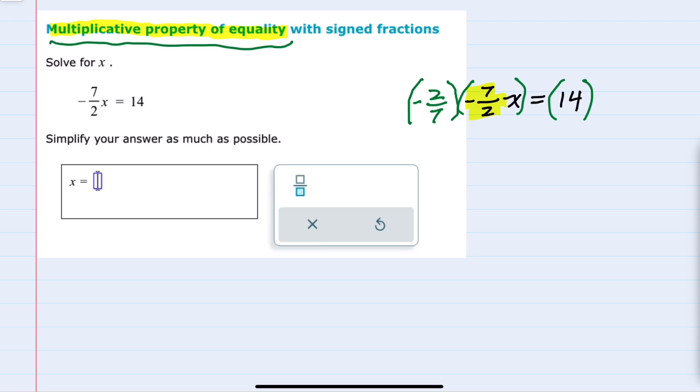And the Multiplicative Property of Equality says that I have to multiply the other side of the equation by that same negative 2 sevenths.